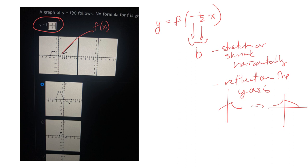But then also, this half, for the b value, the half makes it wider, and so it has to stretch. So for this one here, it has to reflect on the y-axis, and then it has to stretch.